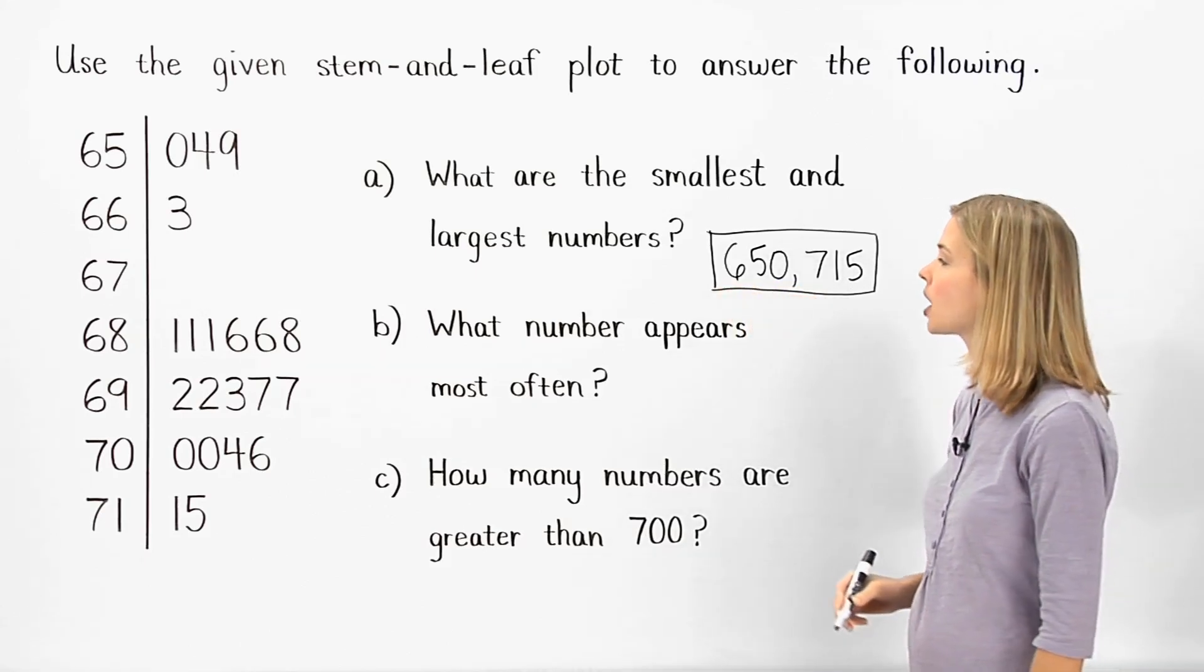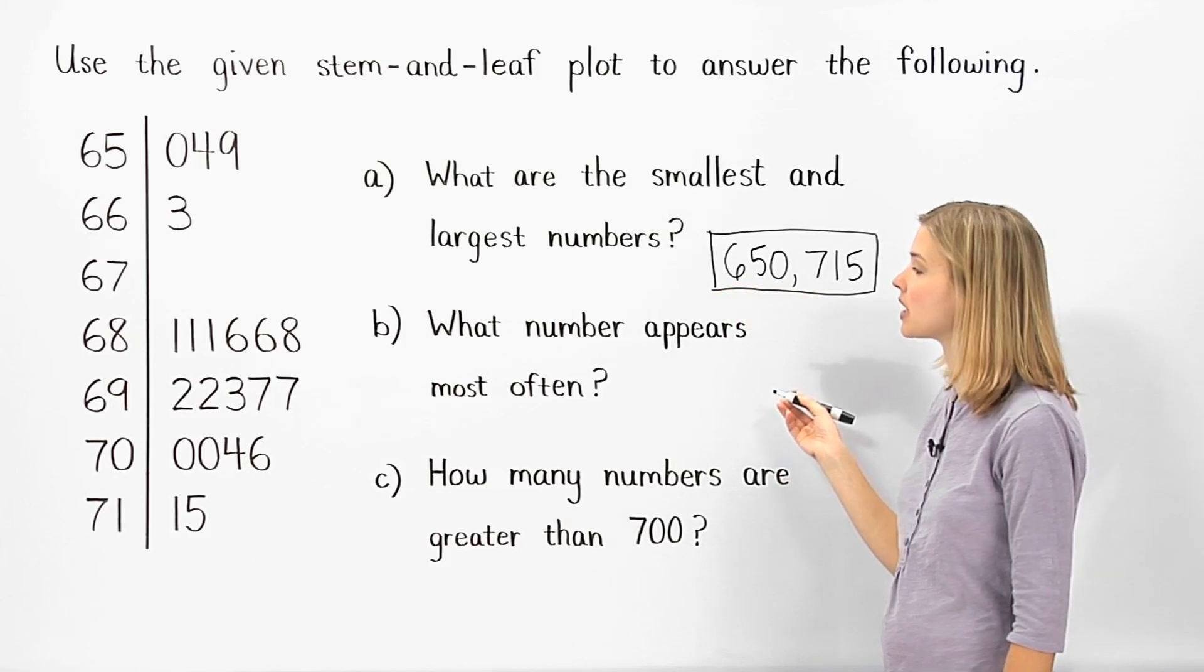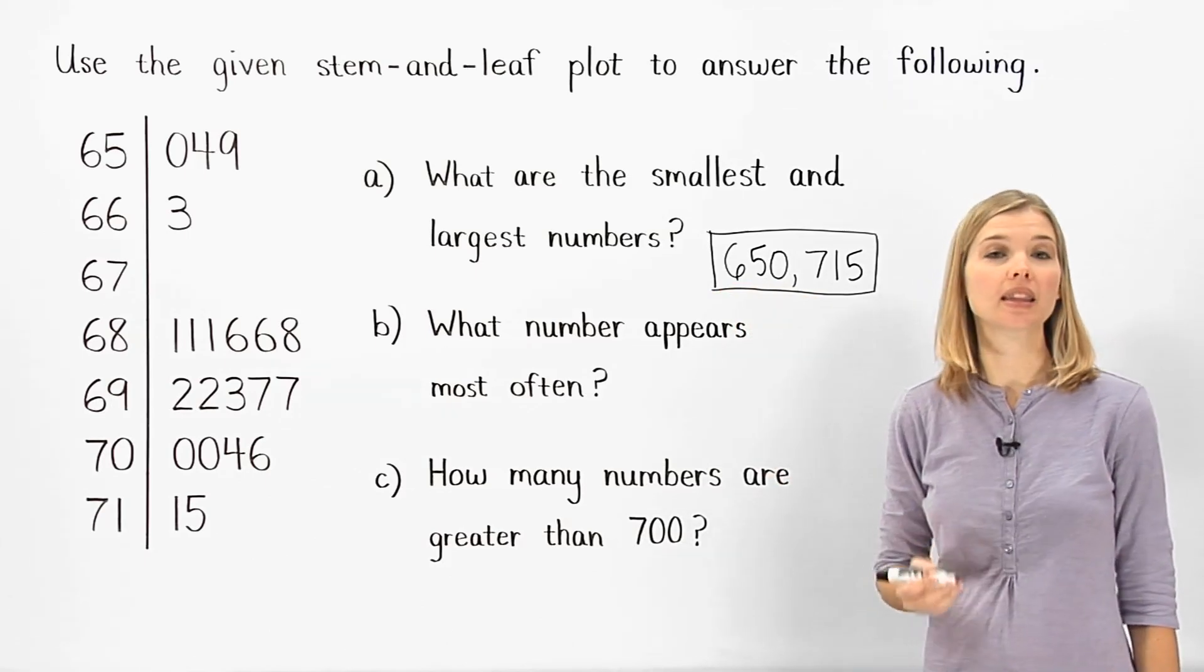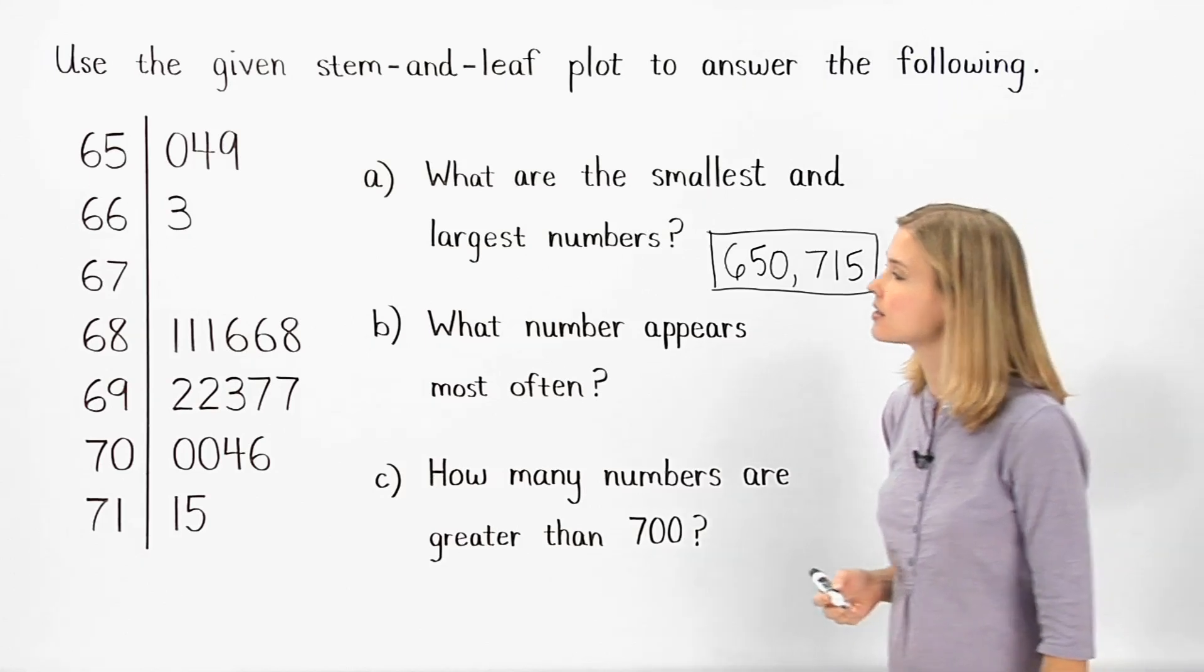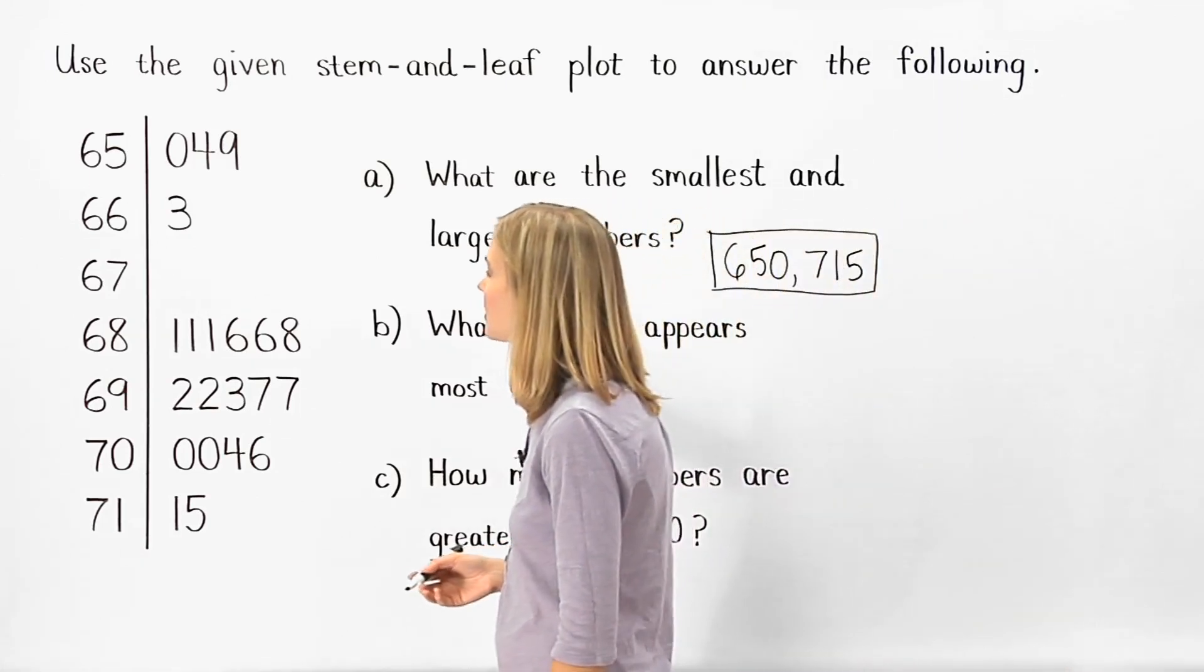In part B, to determine what number appears most often, we look for repeating leaves within a given stem. While there are several leaves that repeat within a given stem,